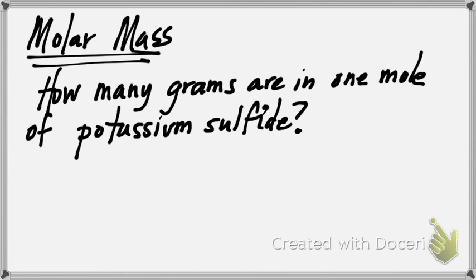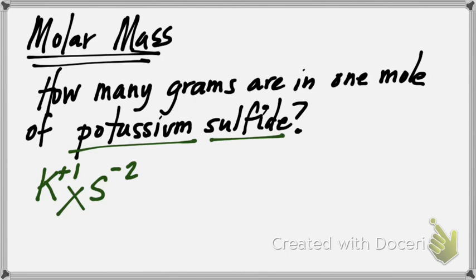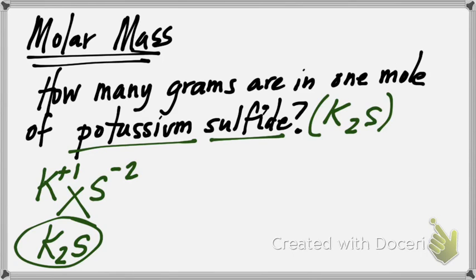The last problem, which is strewn throughout all of chemistry, is molar mass. Essentially what you're doing is trying to figure out how many parts the compound has and how much each part weighs, then add each of those parts together. In this particular problem, you've got how many grams are in one mole of potassium sulfide. You have to figure out what potassium sulfide is. The symbol for potassium is K. The symbol for sulfur is S. Then you look on your periodic table and find the charges or oxidation states. Potassium's in group 1, so it's going to have a plus 1. Sulfur has a negative 2. You're going to swap and drop, and so now you have K2S. That is your compound, K2S for potassium sulfide.